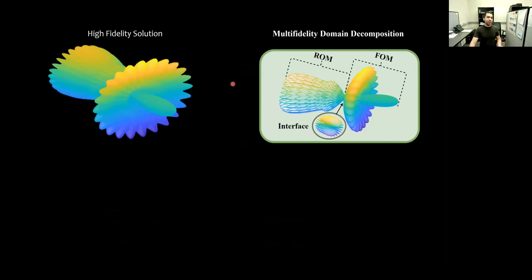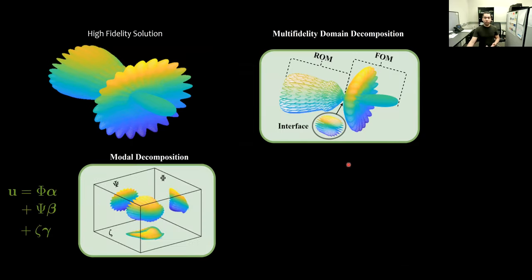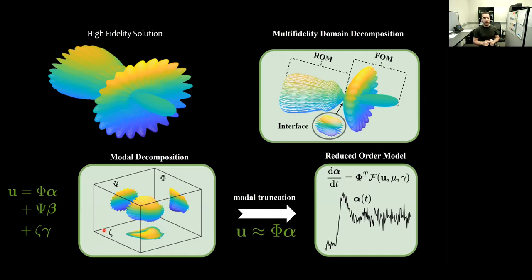To describe the ROM-FOM coupling framework, I use this cartoon to represent the systems that we are dealing with. First, we can perform something like multi-fidelity domain decomposition, and consider ROM for the left part and FOM on the right part. Both parts have some interface. Then we perform some modal decomposition of the left part, and we assume that it can be totally represented by phi, psi, and zeta. And for the sake of order reduction, we consider the projection on just phi to build or construct our reduced-order model.